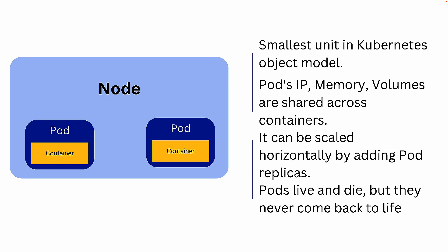A pod represents a single instance of a running process in a cluster. A pod can contain one or more containers, and all the containers in a pod run on the same node and share the same network namespace. As you can see on screen, I have one node and two pods, both running under the same node, and each pod has its own container.